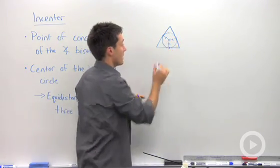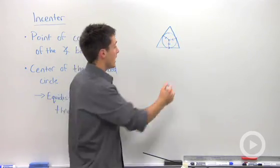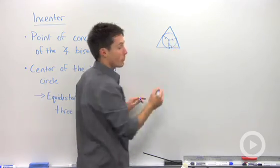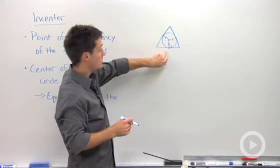So I can mark these three segments as being congruent, and I'm measuring this along a perpendicular from that center of the circle to the side.